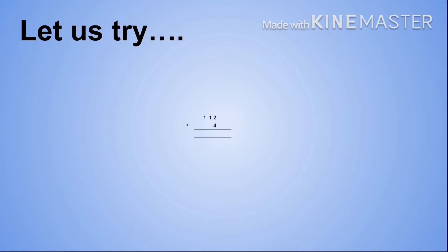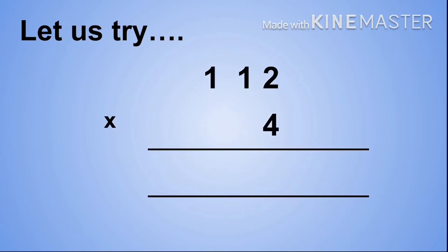Here we have our multiplication equation, which is 112 times 4. Looking at our equation, the 4 is our multiplier, the 2 is our unit, the 1 is our tens, and the other 1 is our hundreds.